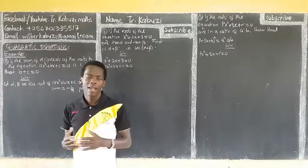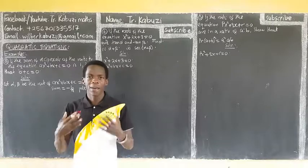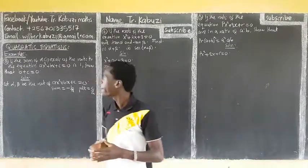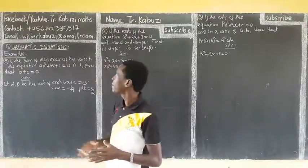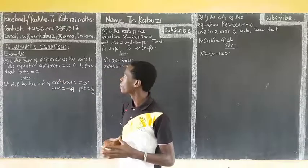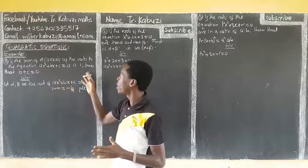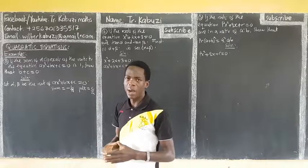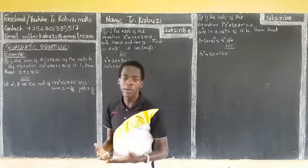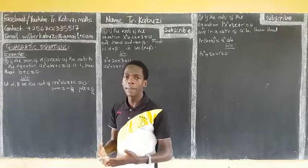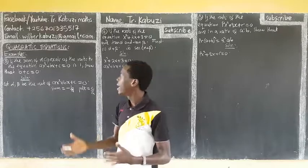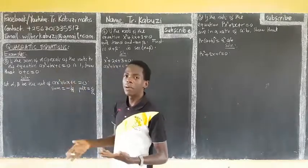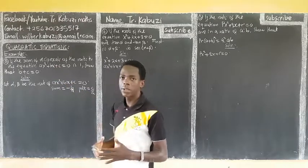Here we have: if the sum of the reciprocals of the roots of the equation is one, show that b plus c equals zero. This equation is talking about the roots of that equation. We let alpha and beta be the roots of this equation.